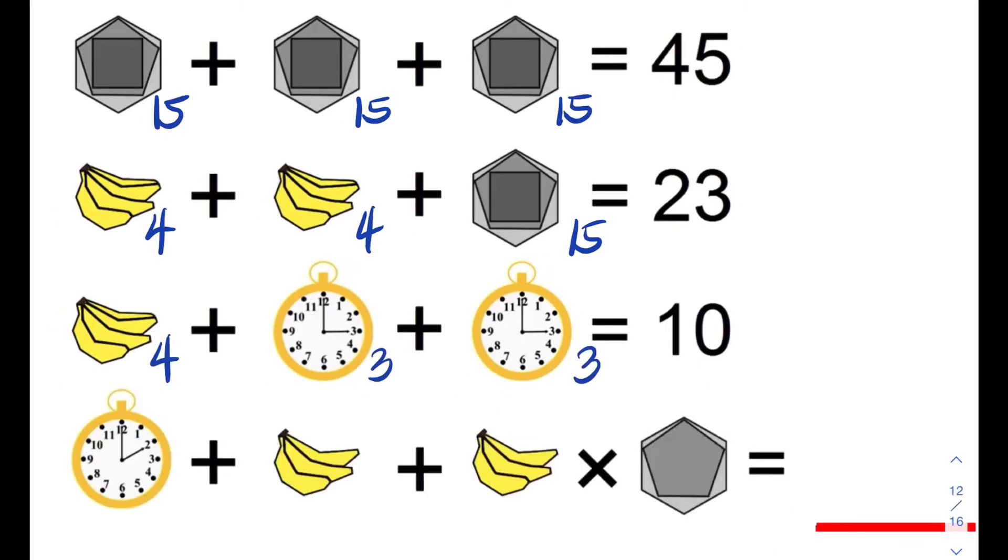Now let's find the value of 2 o'clock plus 3 bananas plus 3 bananas times the geometric shape with a pentagon inscribed in a hexagon. From the previous equation, 3 o'clock has a value of 3. So this means the value of 2 o'clock is 2.